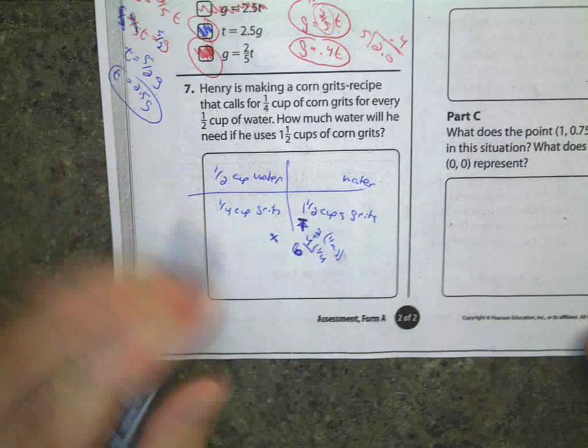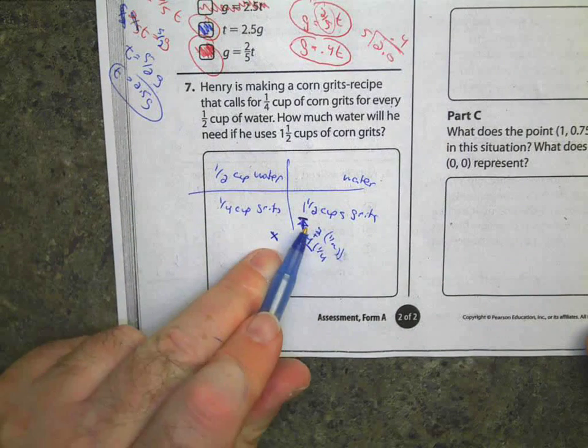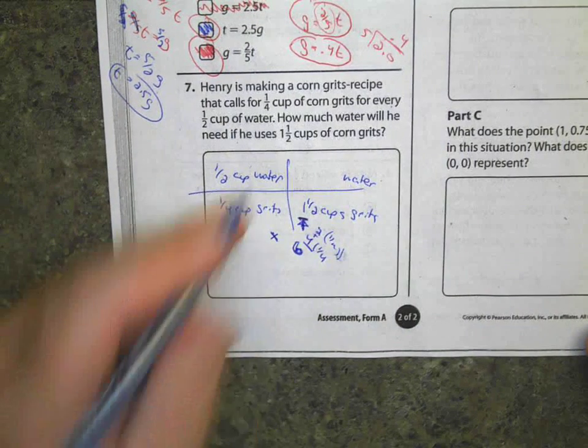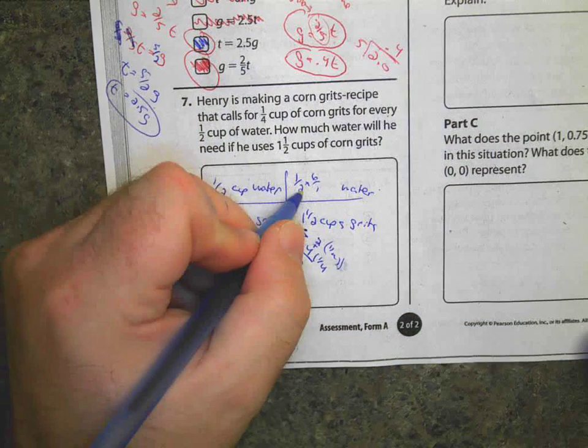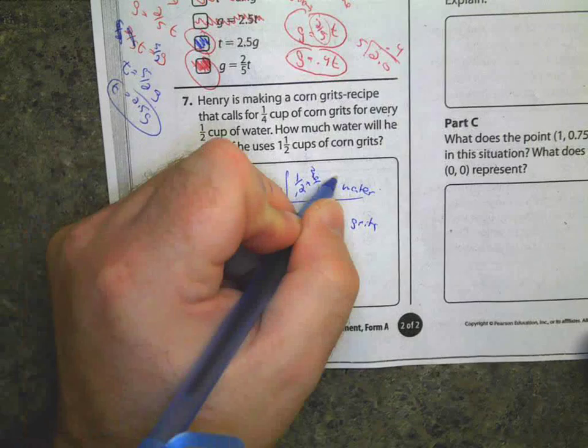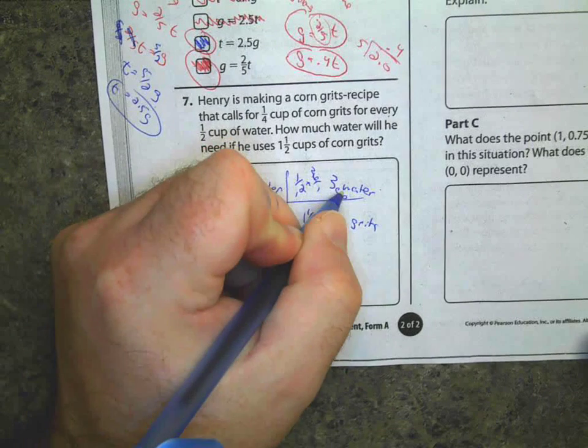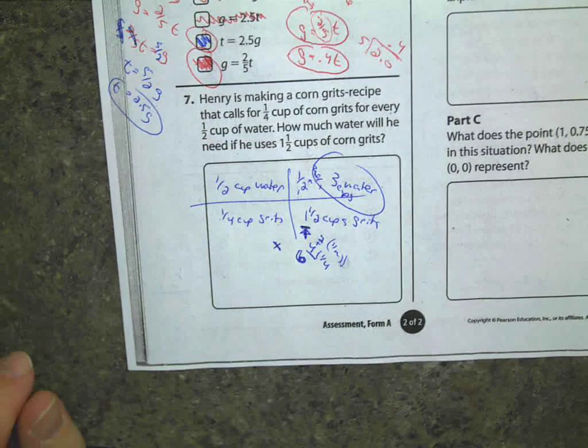So, they're saying one-fourth times six gives me one and a half. One-half times six. One-half times six over one. Reduce it. One, three, three cups. Three cups of water.